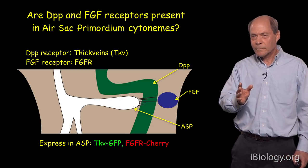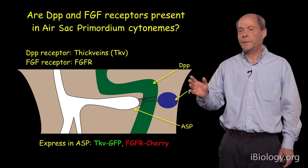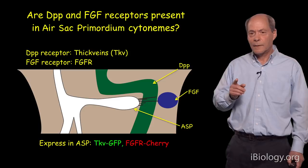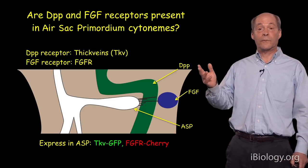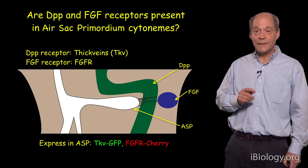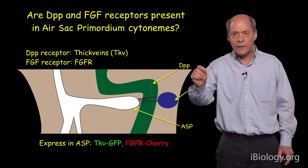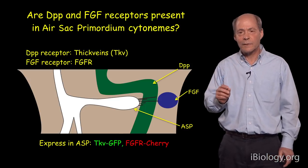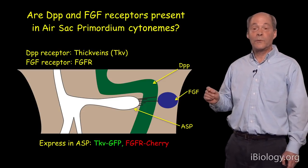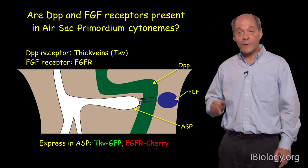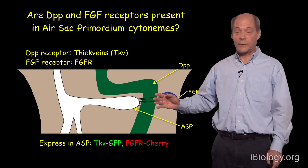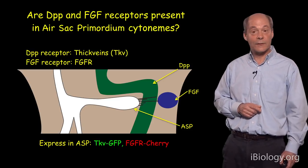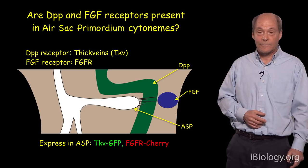If cytonymes are involved in moving DPP and FGF from the wing disc to the air sac primordium, wouldn't we expect the receptors for FGF (FGF receptor) and for DPP (called Thick Veins, or TKV) to be present in cytonymes? We asked that question by expressing both receptors fused to fluorescent proteins specifically in the tracheal air sac primordium cells — GFP fused to Thick Veins, and cherry fluorescent protein fused to the FGF receptor. They are indeed present in cytonymes.